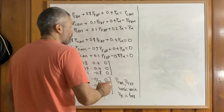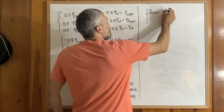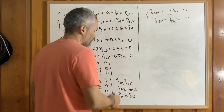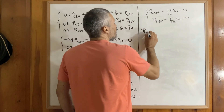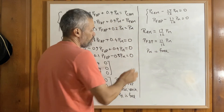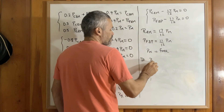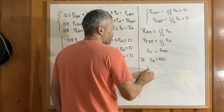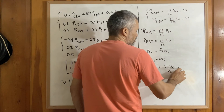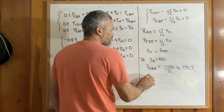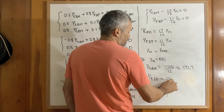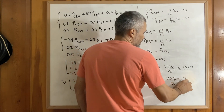We solve the system by rewriting the basic variables in terms of the free variable P of M. For example, if P of M is $100 million, then the price for the chemicals and metals sector is approximately $141.7 million, and the price for the fuels and power sector is approximately $91.7 million.